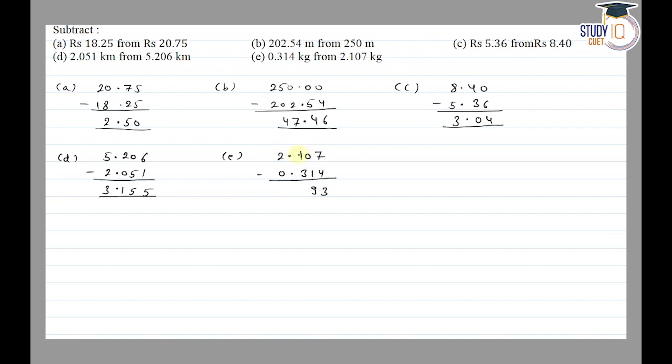Here we have 7 minus 4 is 3. 0 minus 1, we borrow, so here we have 10 minus 1 is 9. 0 minus 3, we borrow again, so here we have 10 minus 3 is equal to 7. 1 minus 0 is 1. So here we have 1.793. That's our final answer. Thank you.